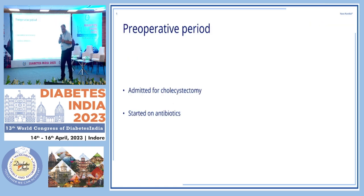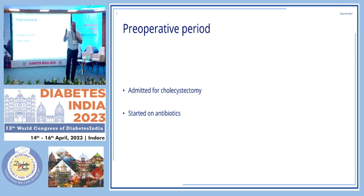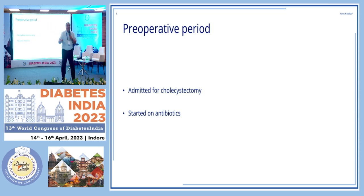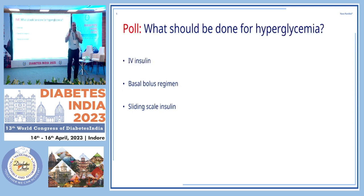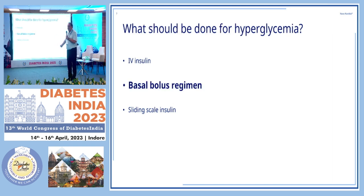Now we know to maintain targets: for anybody admitted with non-critical illness in a hospital, the target is between 140 to 180. We've seen all the studies. And 110 to 140 is the range for the first two days in special settings — especially patients who undergo CABG, who are in the ICU those first two days. So here, this patient is in the ward, so no IV insulin is required.